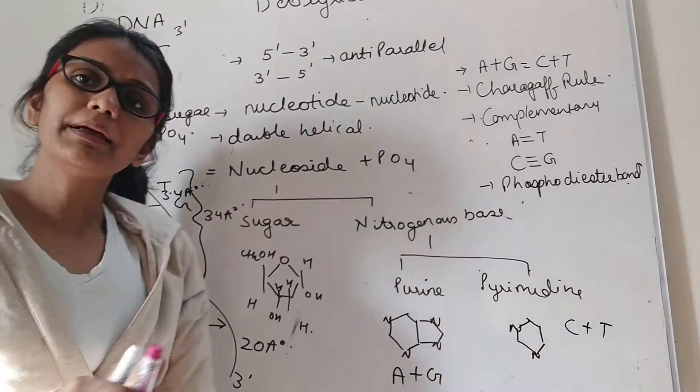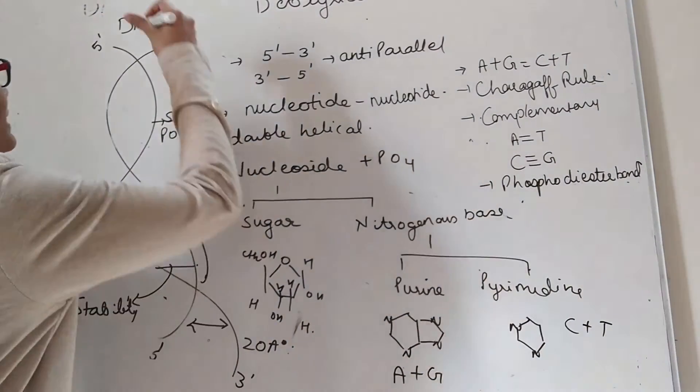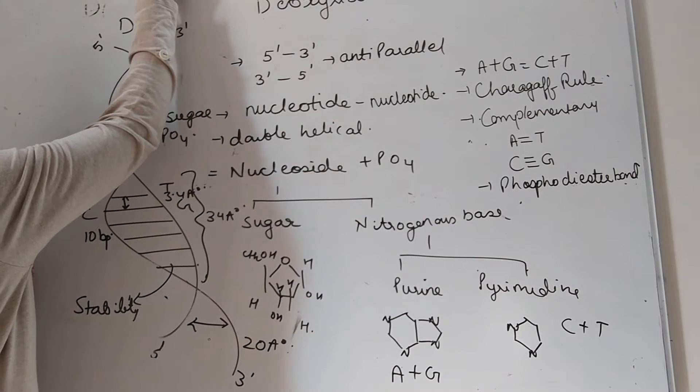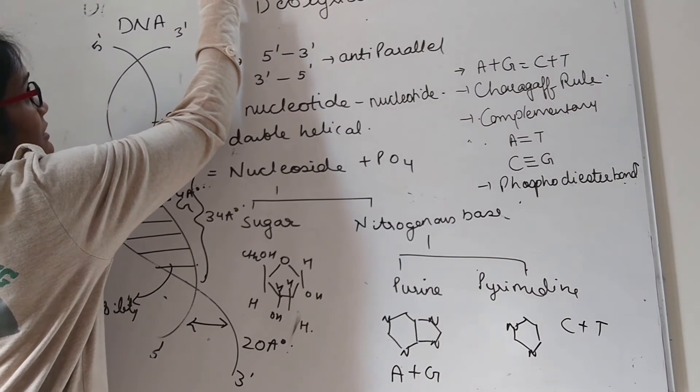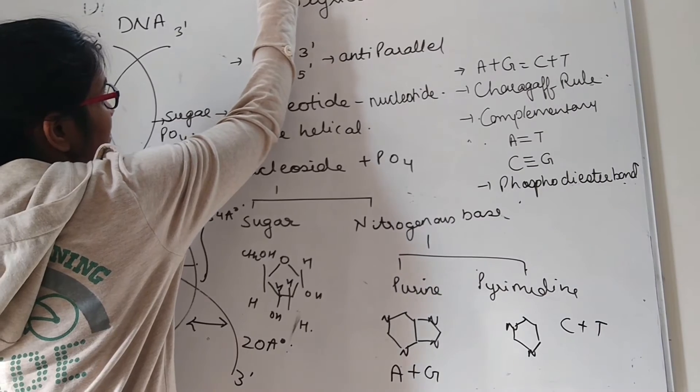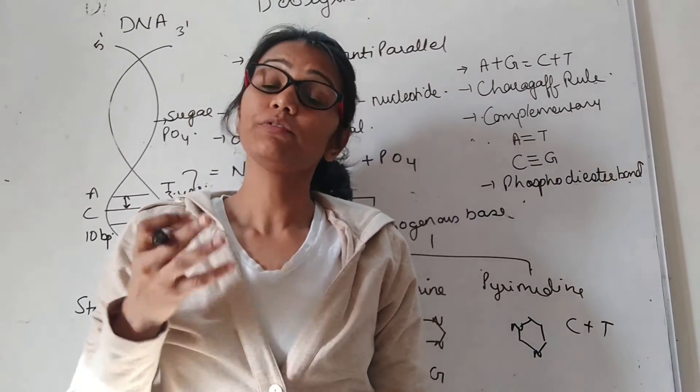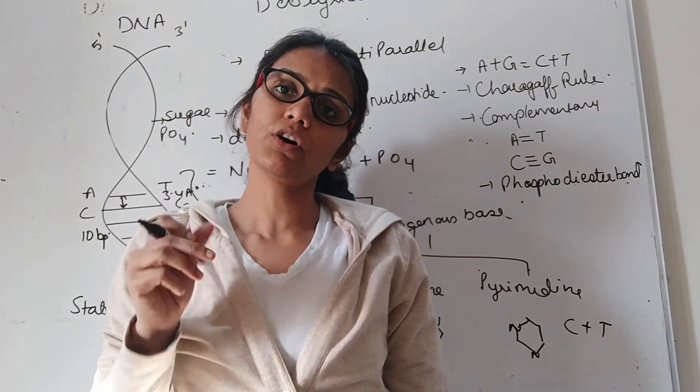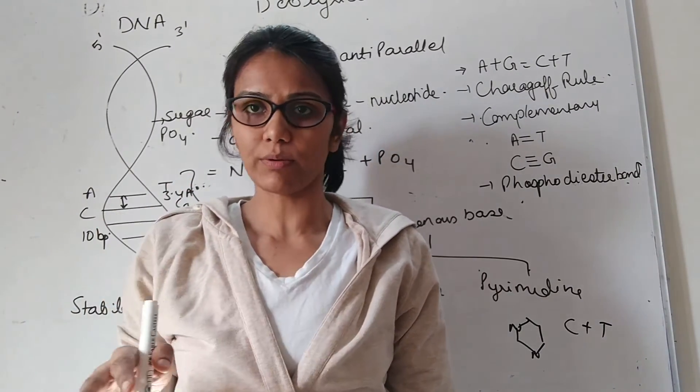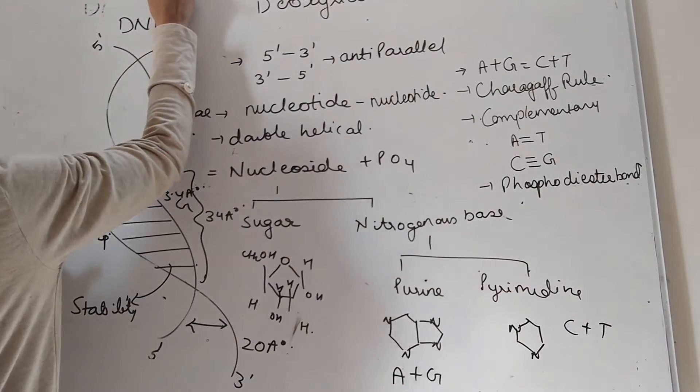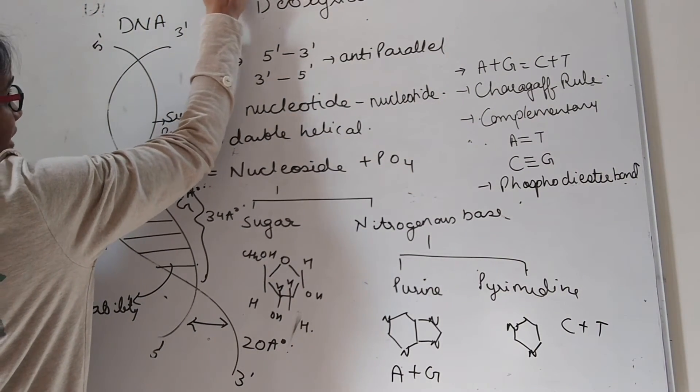This double helical structure was proposed by scientists named Watson and Crick in 1953. Actually, they interpreted the data of whom? They interpreted the data of Rosalind Franklin and Maurice Wilkins.